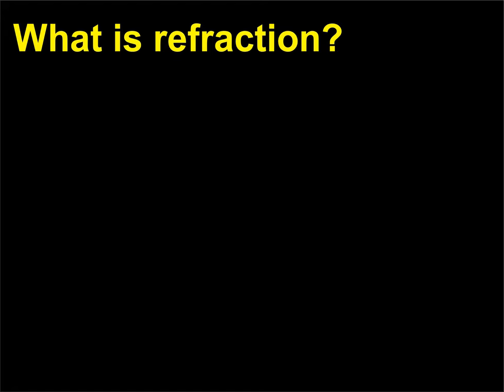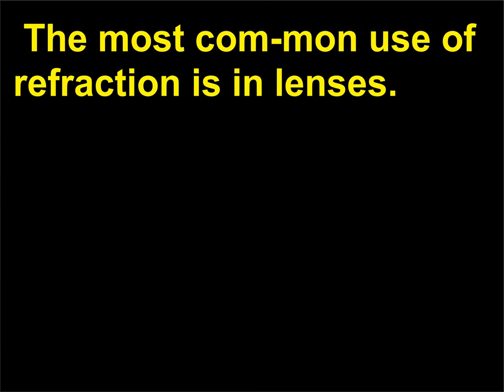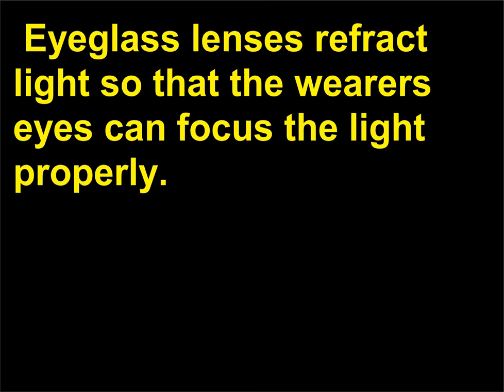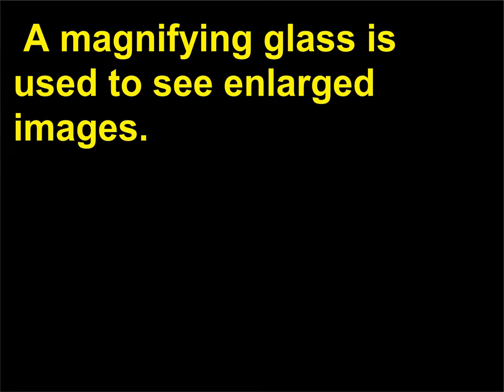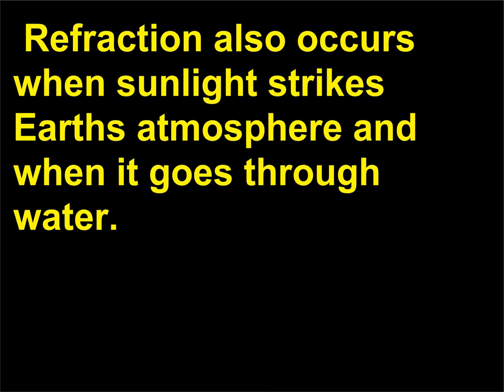What is refraction? Refraction is the bending of light as it goes from one medium to another. The most common use of refraction is in lenses. Eyeglass lenses refract light so that the wearer's eyes can focus the light properly. A magnifying glass is used to see enlarged images. Lenses in cameras produce an image on the film or CCD sensor. Refraction also occurs when sunlight strikes Earth's atmosphere and when it goes through water.